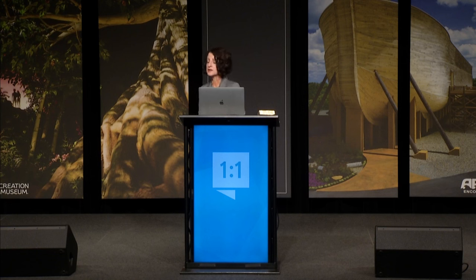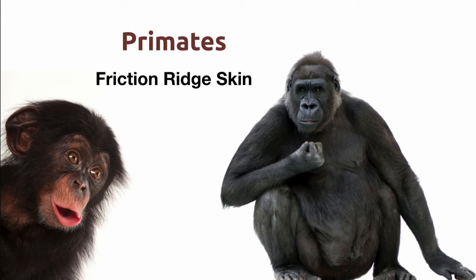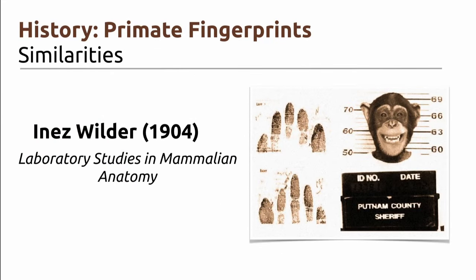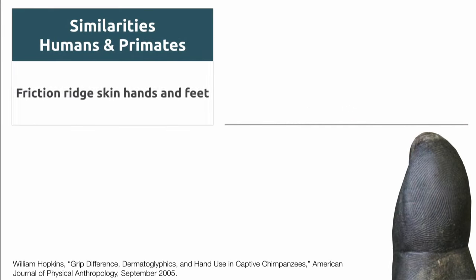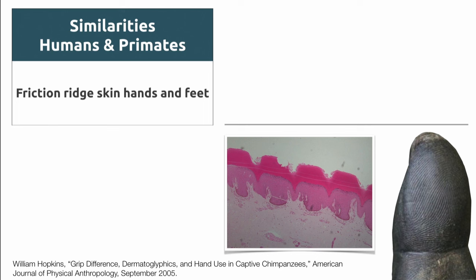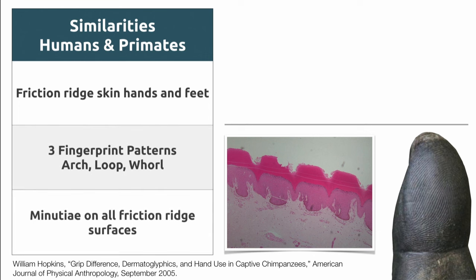Looking at primates, we're going to acknowledge some similarities but primarily focus on the differences — the differences far outweigh the similarities. One of the earliest studies was in 1904 by Ines Wilder, who studied mammalian friction ridge skin and acknowledged: yes, they do have the three types of fingerprint patterns, and they do have raised friction skin. There are three basic similarities between primates and humans: they have friction skin on hands and feet, looking microscopically like mountains and valleys just like human skin; they have the three types of fingerprint patterns — arches, loops, and whorls; and they have minutiae, those details that make it unique on all their friction surfaces, similar to humans but distinctly different.